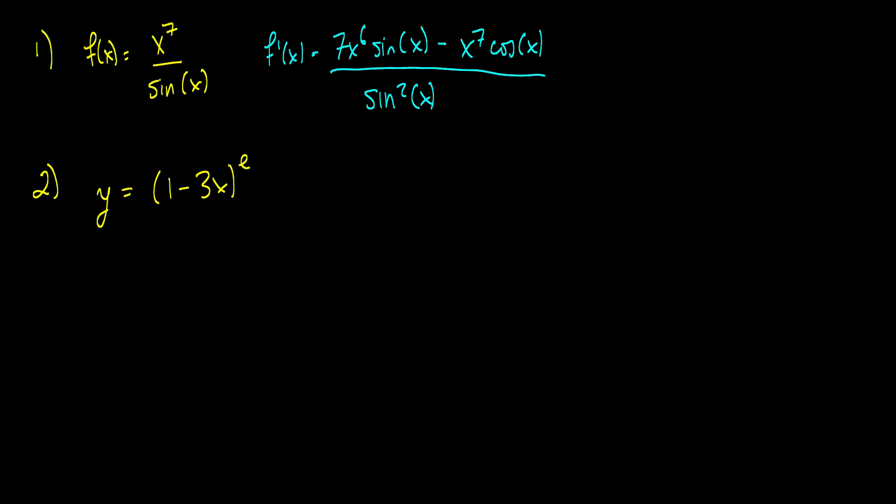Well, this one seems tricky because I put in a number e there. But just remember e is a constant. So all we're applying here is our chain rule. So I'm going to take the derivative of the outside. So that's e times 1 minus 3x to the e minus 1 multiplied by the derivative of the inside, which is negative 3. So this is really negative 3e, 1 minus 3x to the e minus 1. You can't rewrite e minus 1 any simpler.